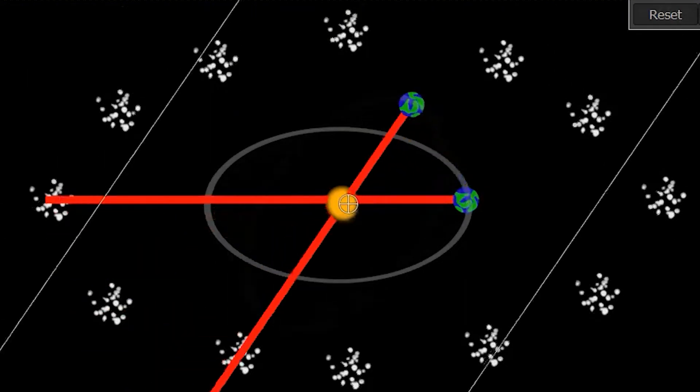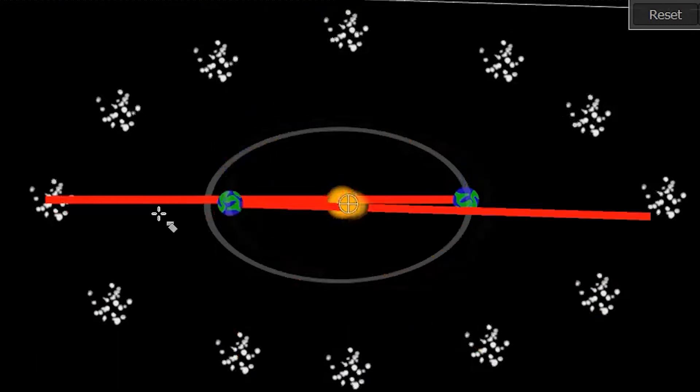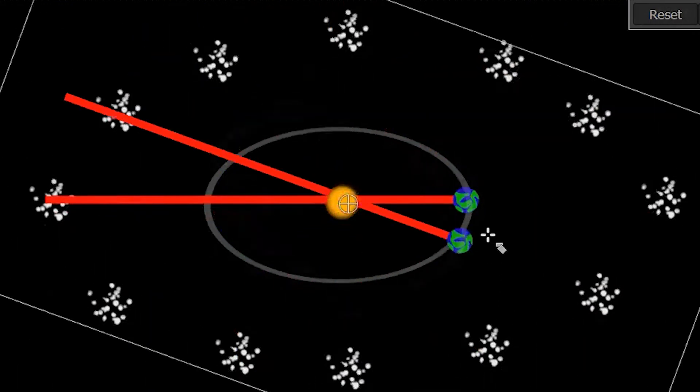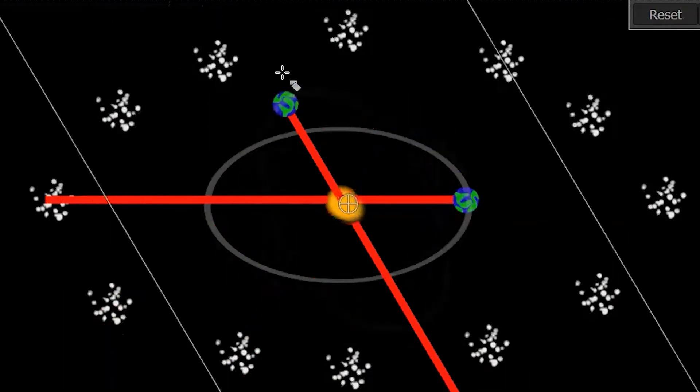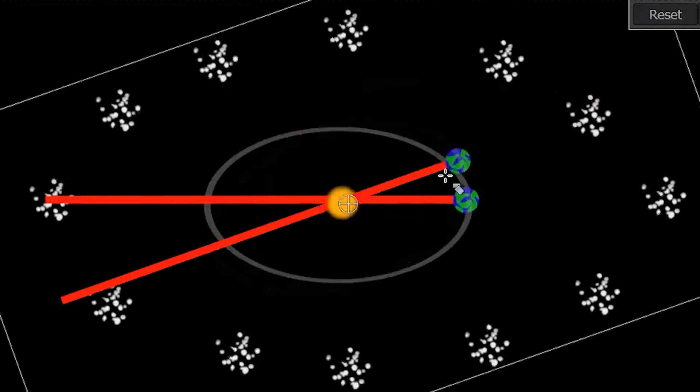As the earth goes around the sun, you can see it will constantly look like the sun is appearing in front of a different constellation. And this is what you know as your astrology sign and why it's called your sun sign.